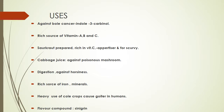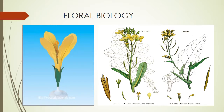Cole crops are a rich source of vitamins A, B and C. Sauerkraut prepared from cabbage is rich in vitamin C, an appetizer and used for scurvy. Cabbage juice is used against poisonous mushrooms, for digestion, and against hoarseness. It is a rich source of iron and minerals. Heavy use of cole crops causes goiter in humans, and the flower compound is cynic green.